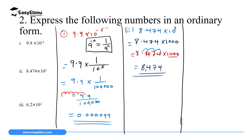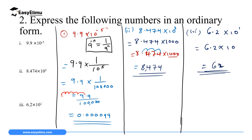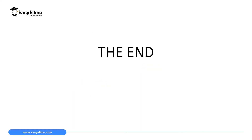The last number: change 6.2 times 10 raised to power 1 into an ordinary number. Since 10 raised to power 1 is 10, this equals 6.2 times 10, which gives us 62. That marks the end of our lesson today. In the next lesson, we will discuss decimal points and common standard prefixes that we use.